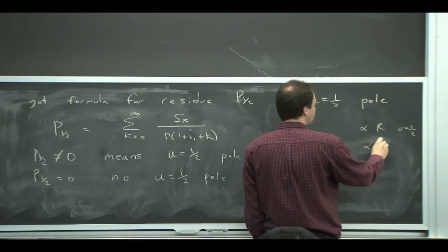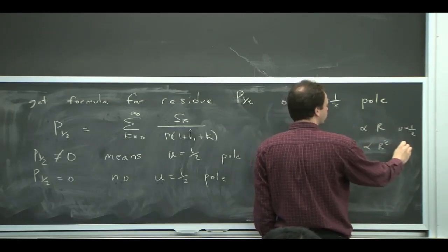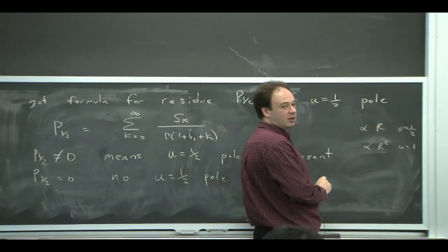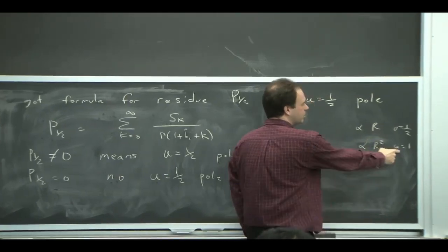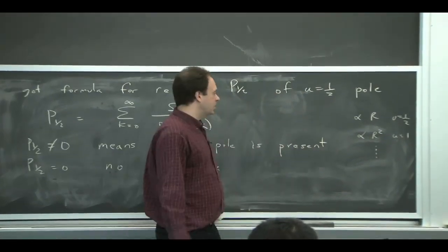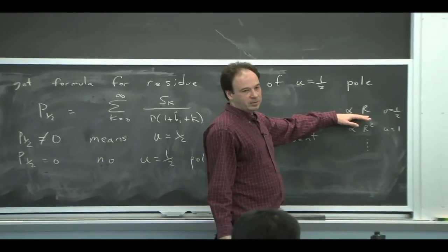If you wanted to remove higher ones, you'd need terms proportional to r squared, for example, for U equals 1, et cetera. So we could have added more terms to do more. But we didn't. We just sort of removed the problem at U equals a half.